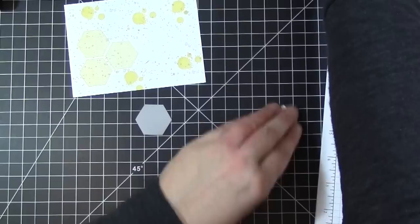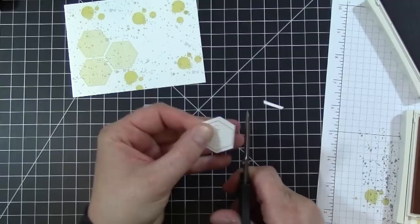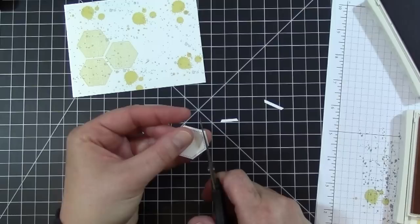For my stamped image and my sentiment I'm actually going to go ahead and trim this down so it's a little bit smaller. Then I'll use my Smokey Slate piece as my border.